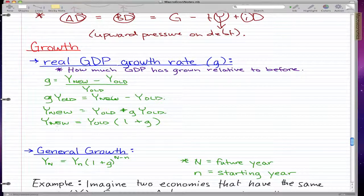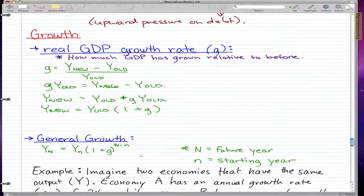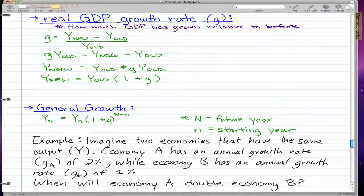And this leads us to our general growth. In general growth, we use the real GDP growth rate. The formula is Y N equals Y n times 1 plus G to the power of N minus n. Capital N is the future year, and little n is the starting year.